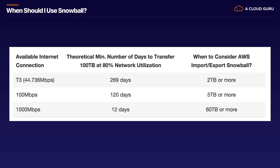Here is when you should use Snowball, based on available internet connections. A T3 connection at 44.736 megabits per second, 100 megabits per second, and 1,000 megabits per second — pushing 100 terabytes would take 269 days, 120 days, or 12 days respectively. So you should consider using Snowball at 2 terabytes or more for a T3 connection, 5 terabytes or more for 100 megabits per second, and 60 terabytes or more for 1,000 megabits per second.